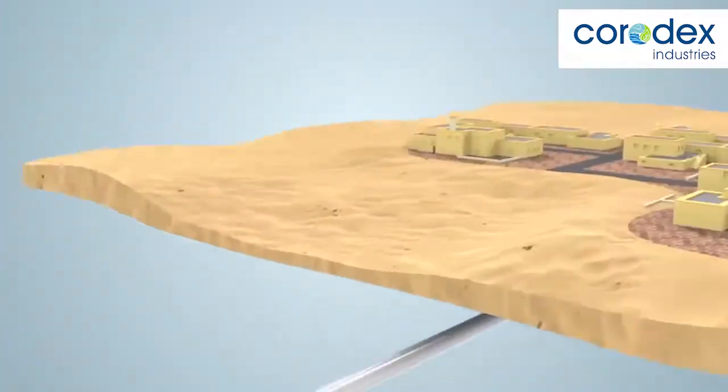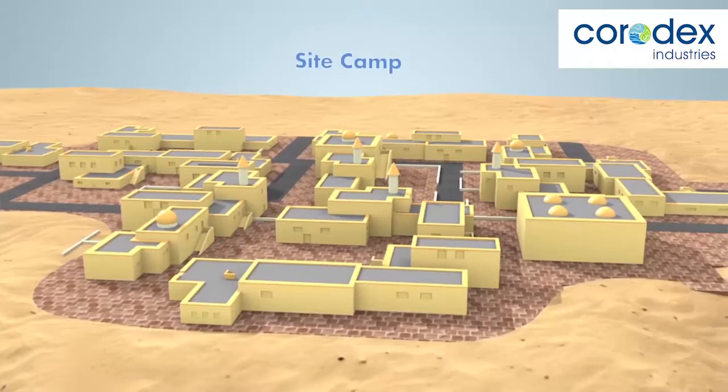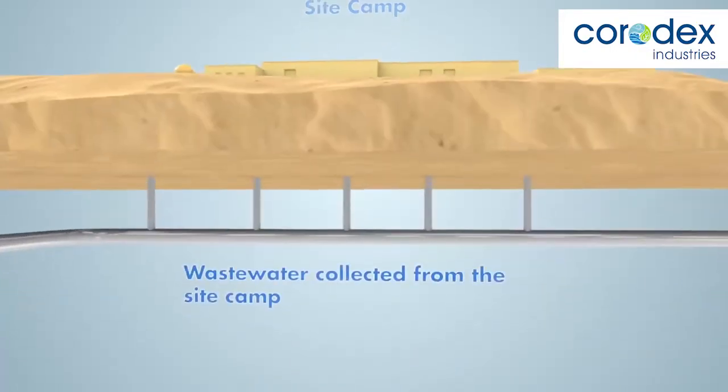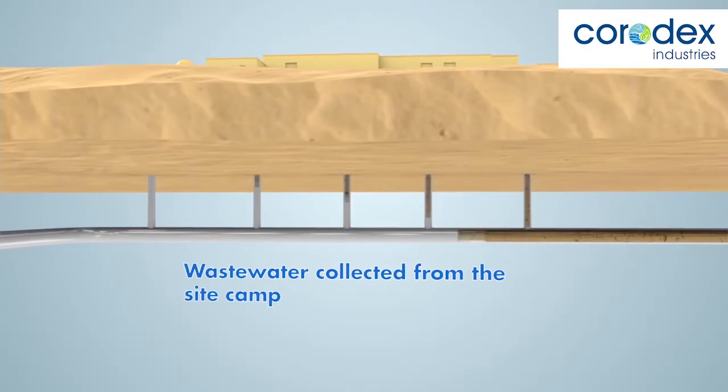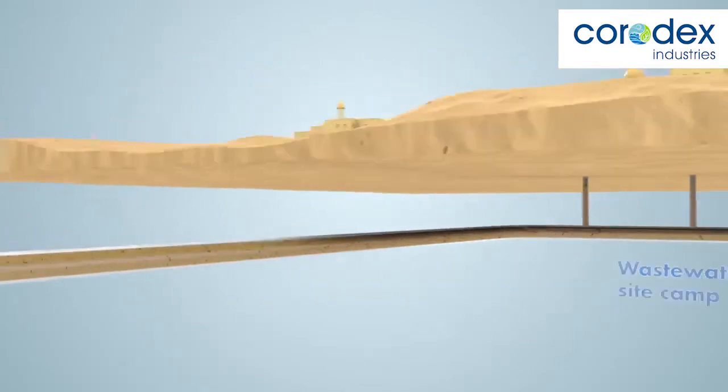Generally, wastewater is collected from several sources like urban dwellings, oil and gas, mining or construction camps. All wastewater is transported from there.